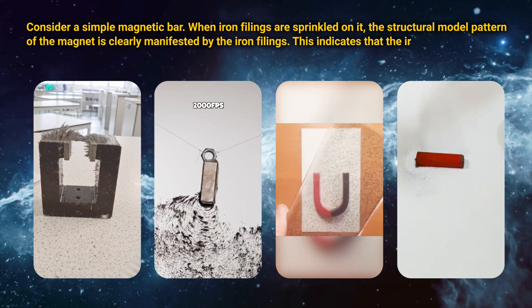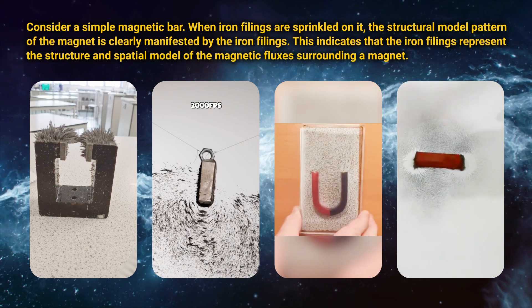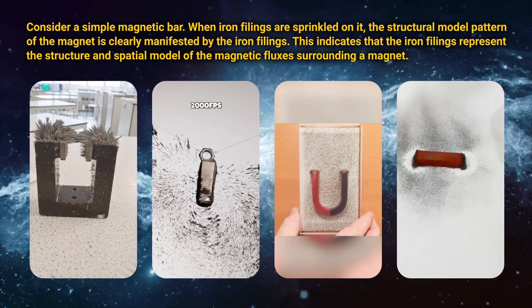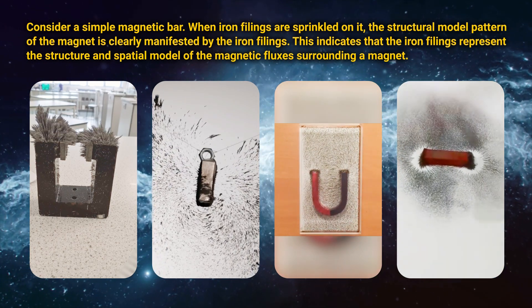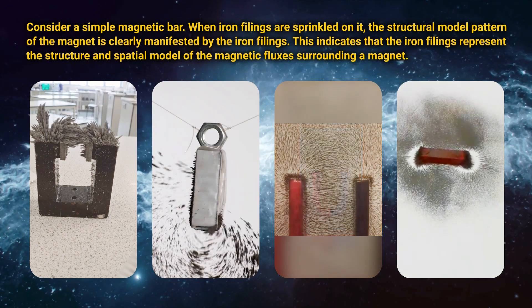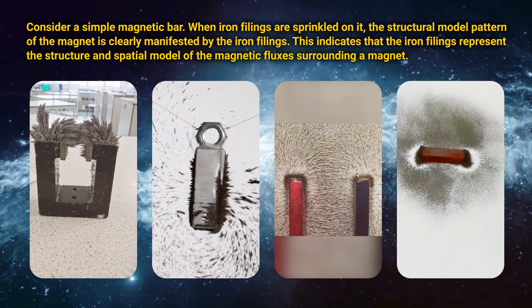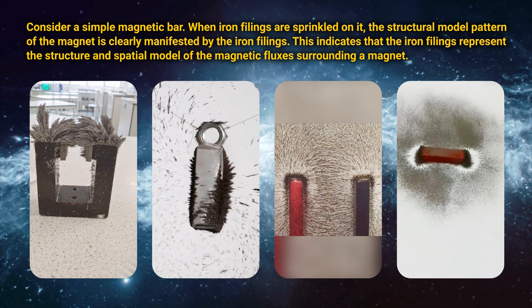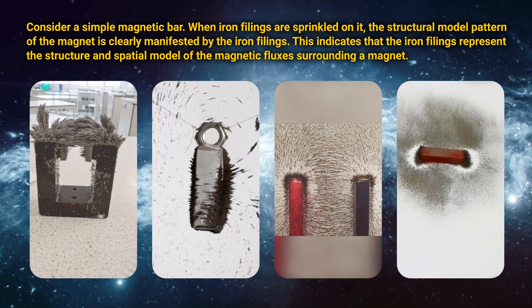Consider a simple magnetic bar. When iron filings are sprinkled on it, the structural model pattern of the magnet is clearly manifested by the iron filings. This indicates that the iron filings represent the structural and spatial model of the magnetic fluxes surrounding a magnet.